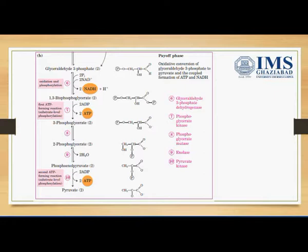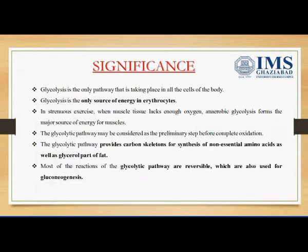A water molecule will be eliminated and it will convert into phosphoenol pyruvate. Finally, phosphoenol pyruvate will convert into pyruvate. Since we have two molecules of glyceraldehyde-3-phosphate, steps 6 through 10 will be repeated two times, and we will get 2 pyruvate molecules from one glucose molecule.